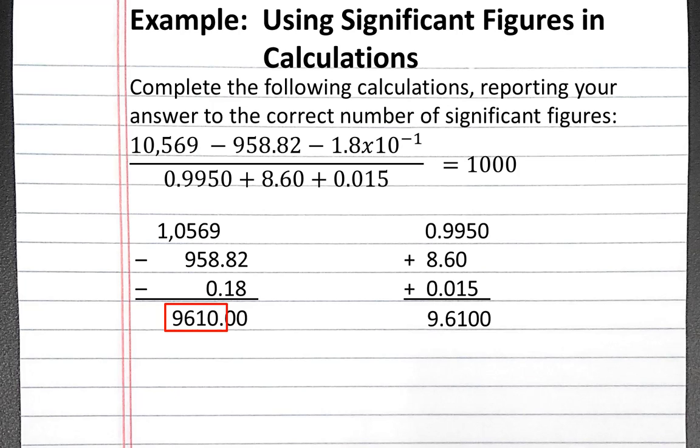In this case, our least significant number is limited to the hundredths column, or two numbers past the decimal point. So our result should only carry three significant figures.